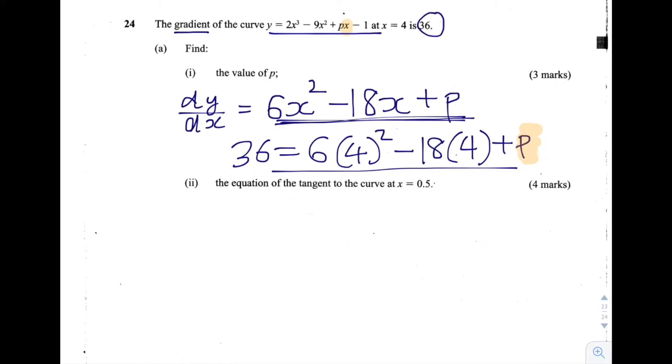So I'm going to write this over here. 36 is equal to 6 multiplied by 4 squared. 4 squared is 16. 16 times by 6 is 96 minus 18 times by 4, which is minus 72 plus p.